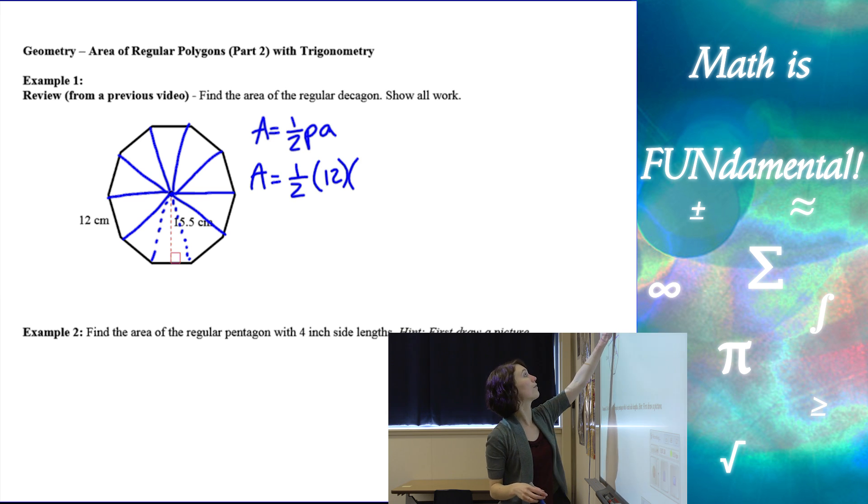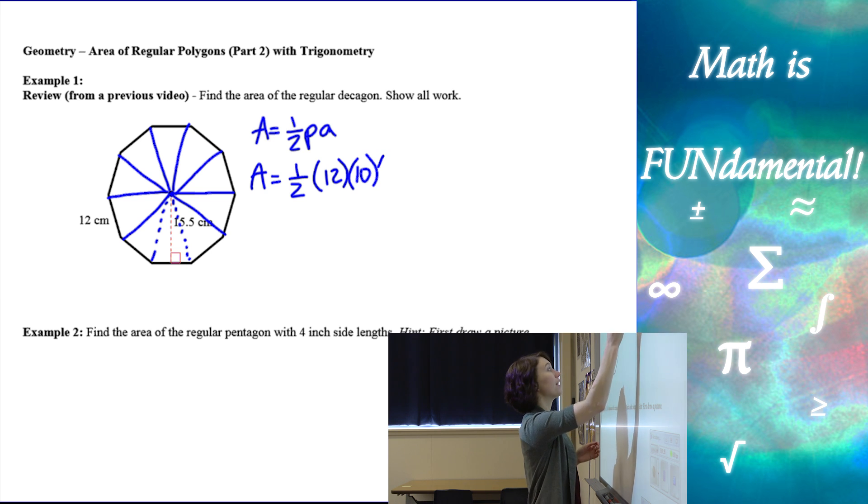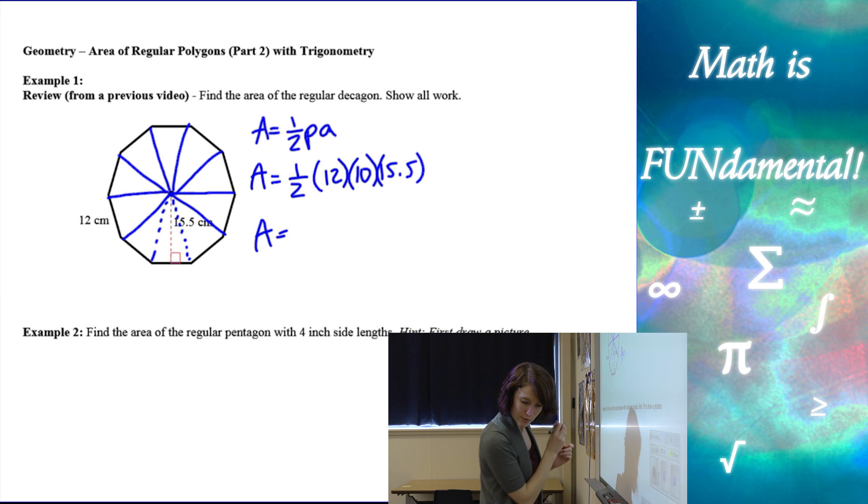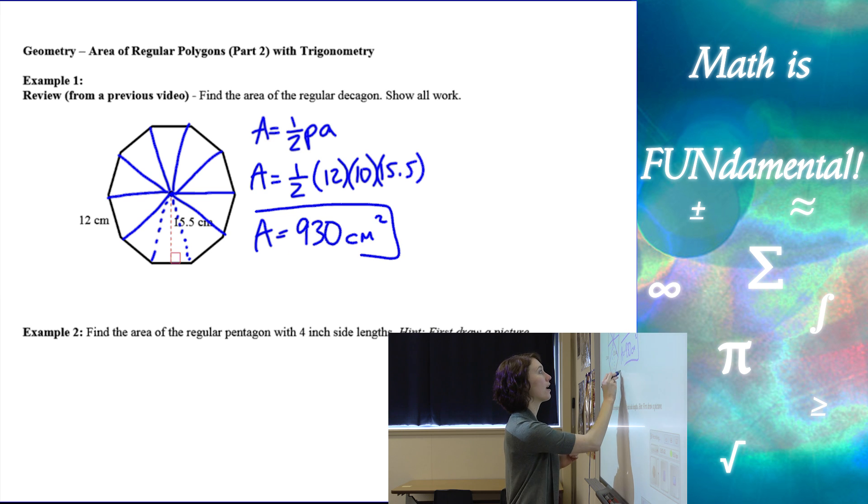So we have one, two, three, four, five, six, seven, eight, nine, ten sides. Alright, times the height of each triangle or the apothem, which is 15.5, and we multiply those all together and we get 930, and then we always put our units centimeters squared for area.